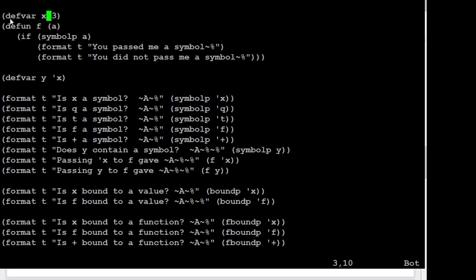Here we've got, we're going to create a global variable x and we're going to create this function f. f's going to take one parameter, a, and it's going to see if what got passed to it was a symbol. If it was, it's going to say you passed me a symbol and if it wasn't, it's going to say you didn't pass me a symbol. Nothing too fancy, just showing the use of symbol-p here in a function. I'm going to create one more variable here, y. What I'm going to store in y is a symbol. I'm not storing the value of x in y, I'm storing the actual symbol x, the identifier x, in y.